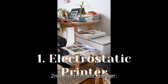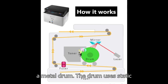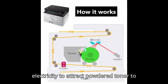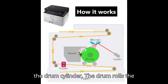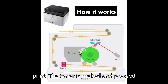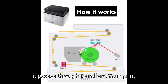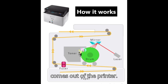The second application is the electrostatic printer. The printer's laser beams your print onto a metal drum. The drum uses static electricity to attract powdered toner to its cylinder. The drum then rolls the toner onto the paper in the form of your print. The toner is melted and pressed onto the paper by heat from a fuser as it passes through its rollers, and your print comes out of the printer.